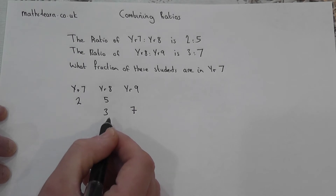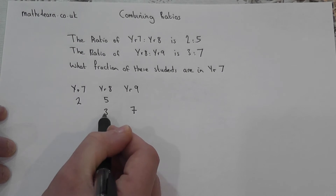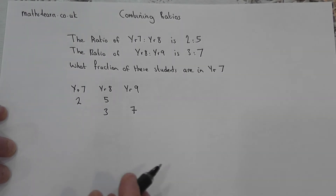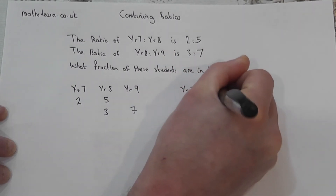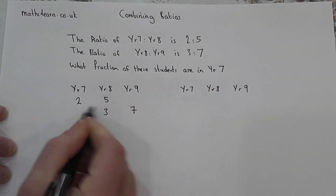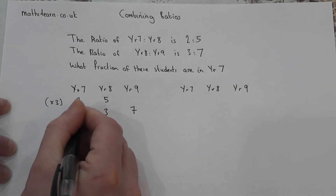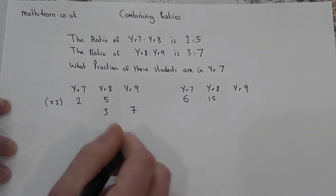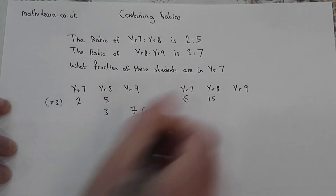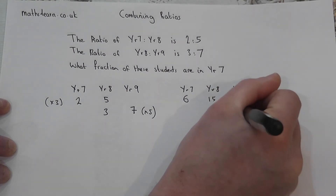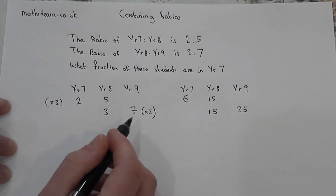5 and 3 both go into 15, so if I multiply the top row by 3 and the bottom row by 5, watch this. Year 7, Year 8, and Year 9: the top row times 3 gives me 6 and 15, and the bottom row times 5 gives me 15 and 35. I've now got a consistent number in that shared column of Year 8.